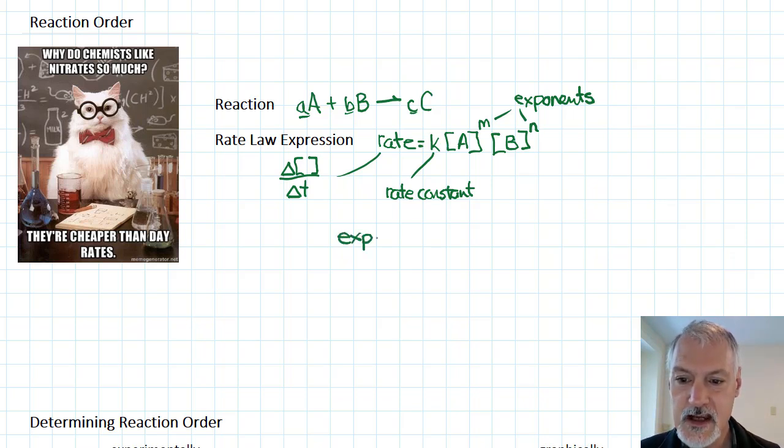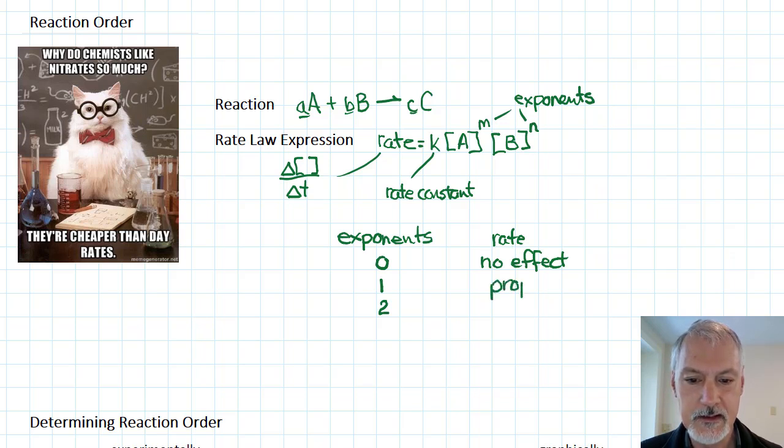While they can take on many values in higher level courses of chemistry, we're going to focus on exponents that can have the value of 0, 1, or 2. A 0 exponent has no effect on the rate, meaning if I change that particular concentration, the rate is unaffected. A first order, or exponent of 1, indicates a directly proportional effect, meaning that if I doubled a concentration, I would double the rate.